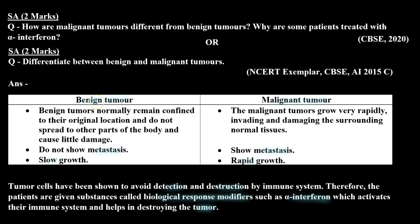The formal answer: Benign tumor normally remains confined to their original location and does not spread to other parts of the body, causing little damage. Malignant tumor grows very rapidly, invading and damaging the surrounding normal tissues. Benign tumor does not show metastasis, while malignant tumor shows metastasis.